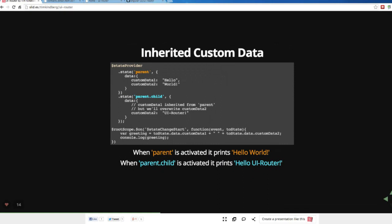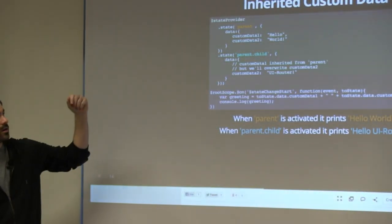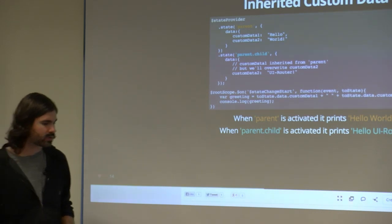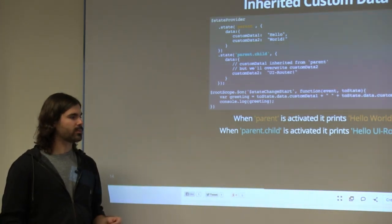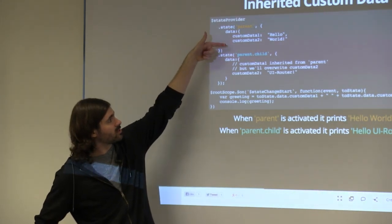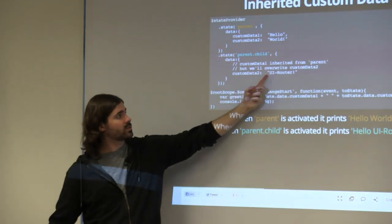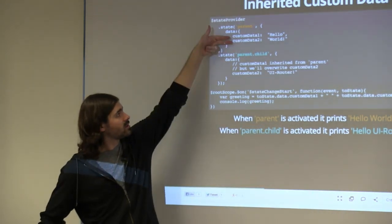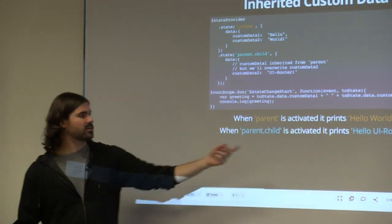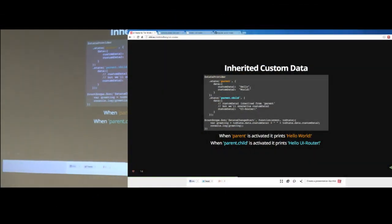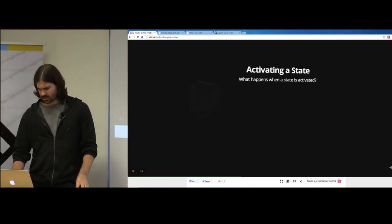Custom data is the second thing that inherits. We promote using the data property to store anything custom — not a rule, but a suggestion to promote backwards compatibility. Here we define two data items: customData1 and customData2. The child overrides customData2 and changes it to 'UI Router'. When the parent is activated, it prints 'hello world'; when the child is activated, it prints 'hello UI Router' because it overwrote that second one and inherited customData1.